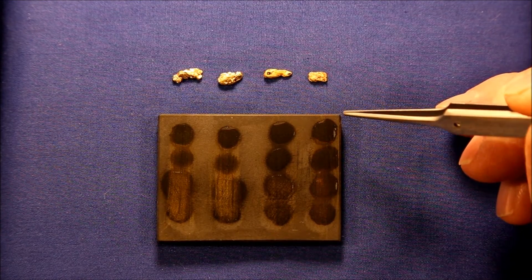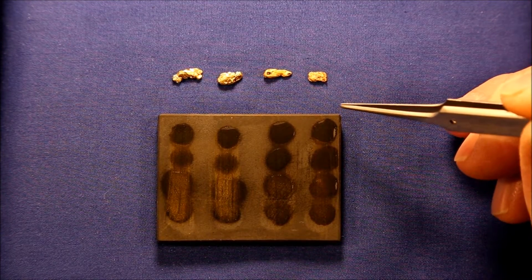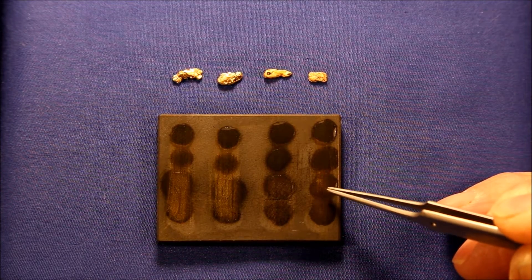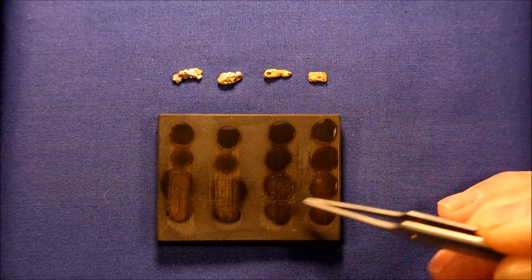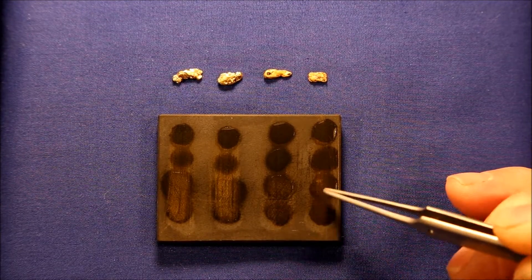These acid based gold tests have one weakness and that is that they're very time sensitive. For example, I've now waited another 10 minutes and you can see that the weaker acids, this is for the 14 carat and the weakest for the 10 carat, have started to have a reaction here.